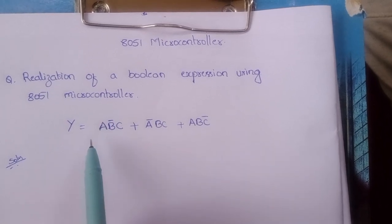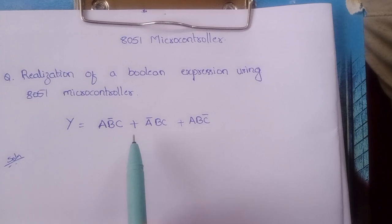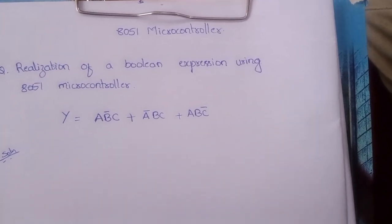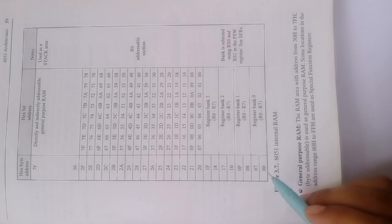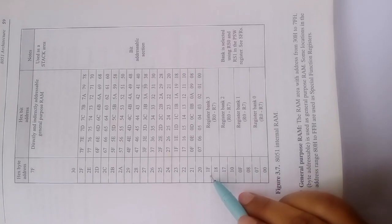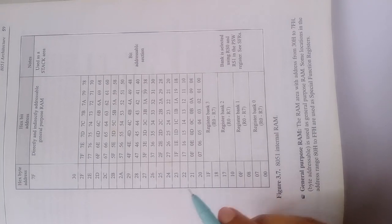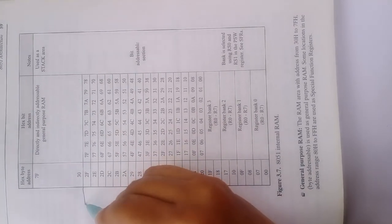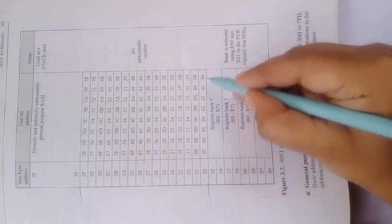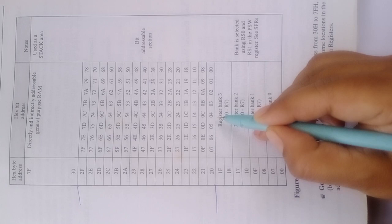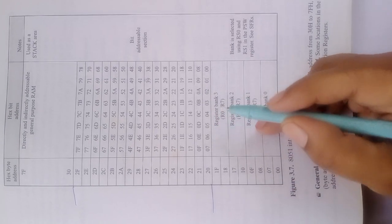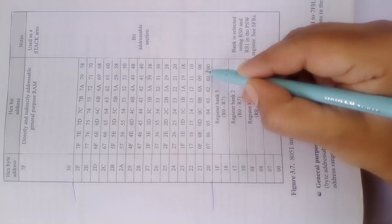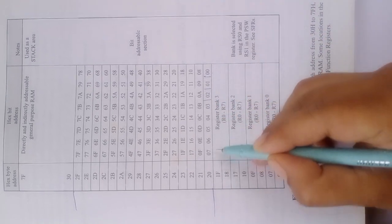Before writing the program, let us analyze the variables and how to assign them to different memory locations. We are looking at the internal structure of the RAM in the 8051 microcontroller. From 00H to 1FH there are register banks. From 20H to 2FH, there is a 16-byte bit-addressable area, meaning each byte has 8 bits and each bit in these memory locations has its own bit address. In our program we want to use this because a, b, and c are boolean variables which take a binary value of either 0 or 1 — they are bits — so we use these bit addresses to realize the expression.